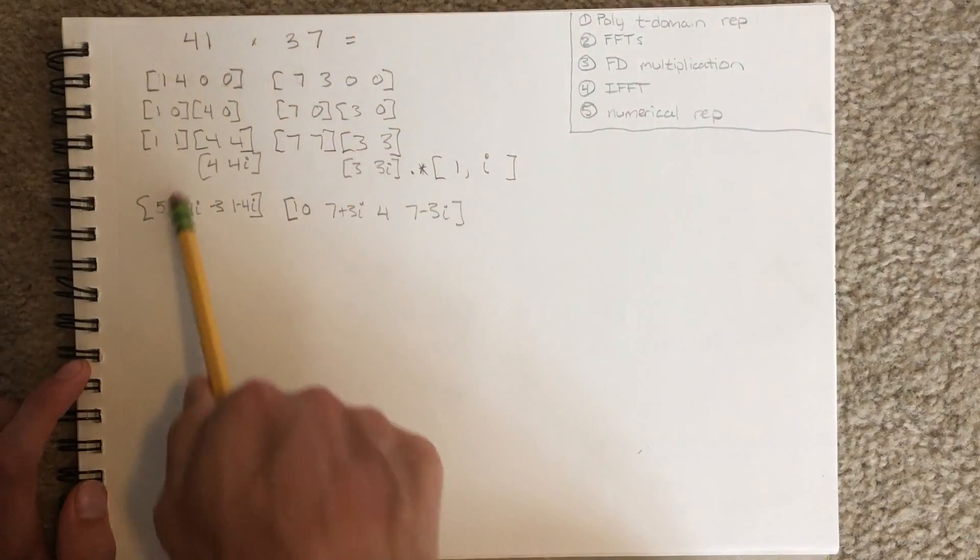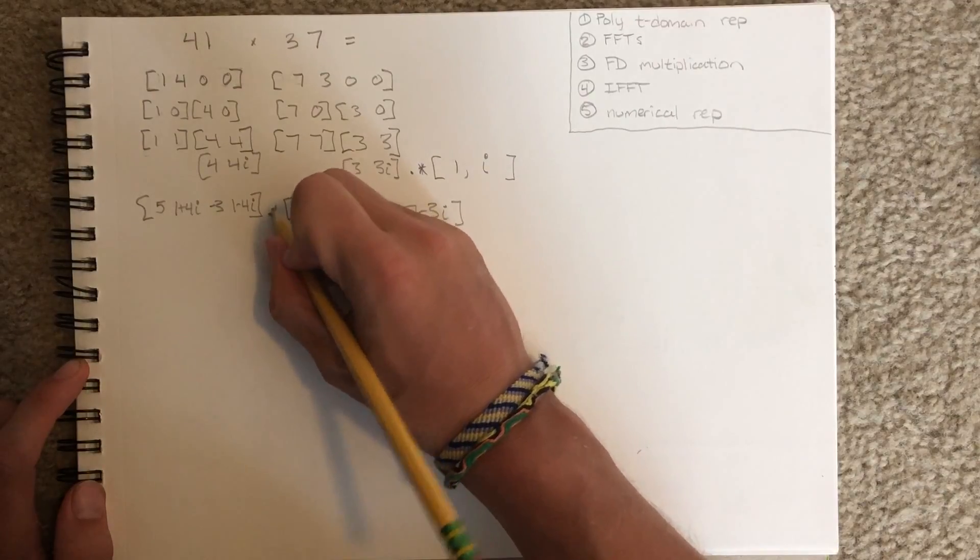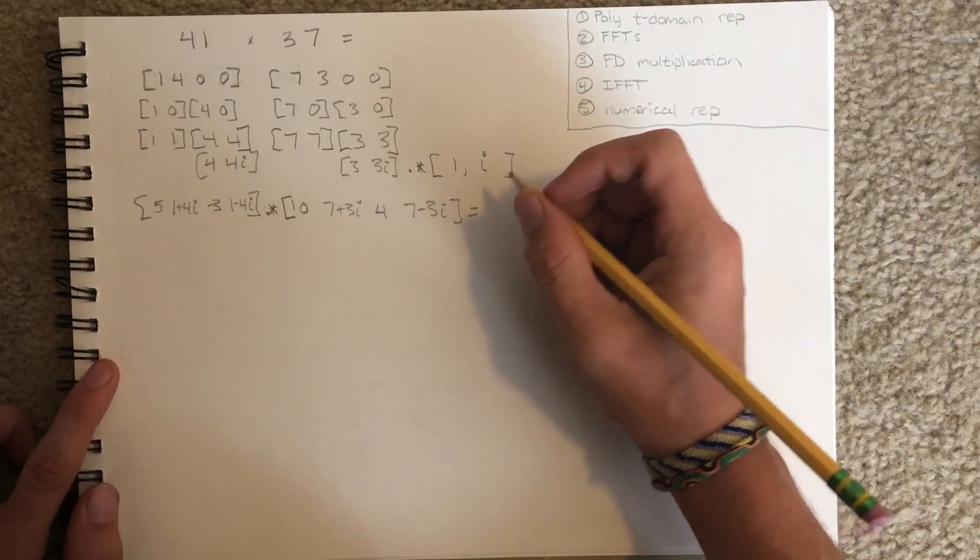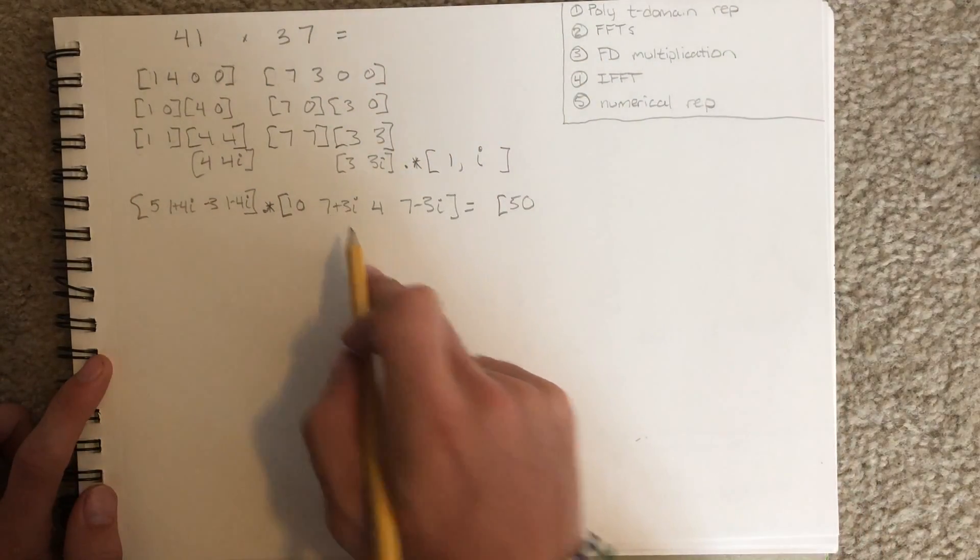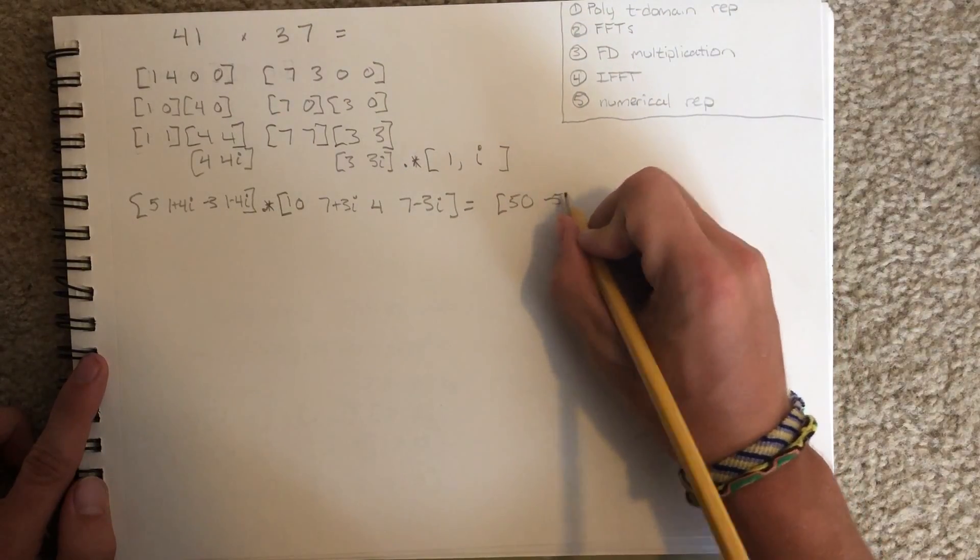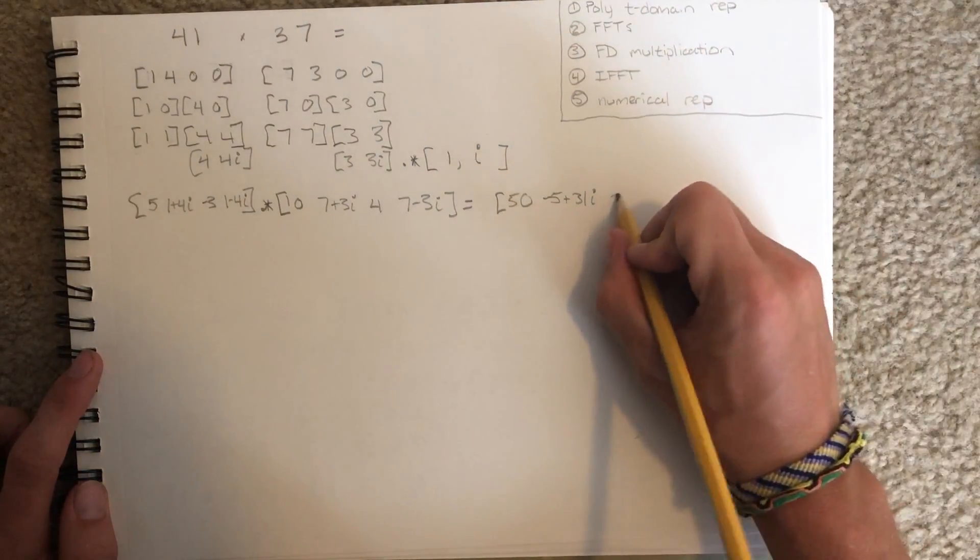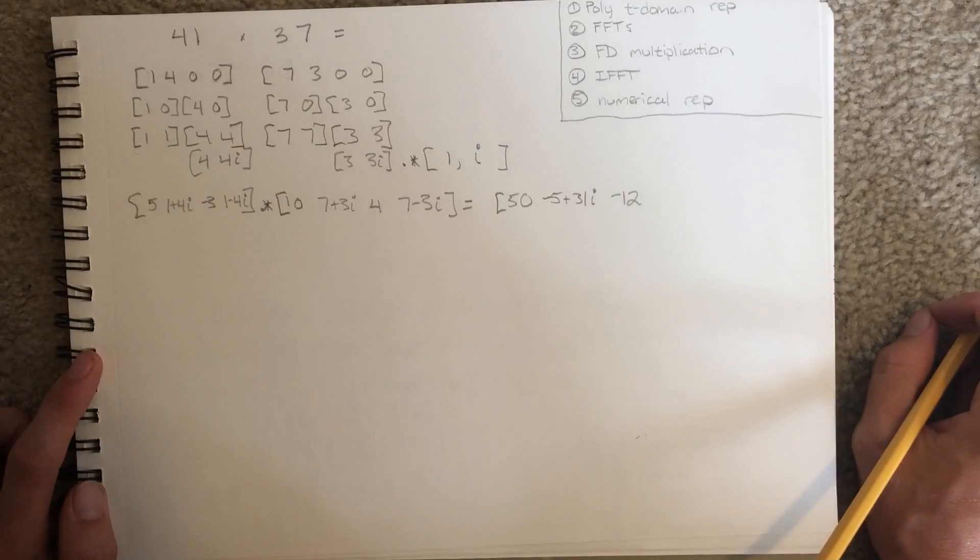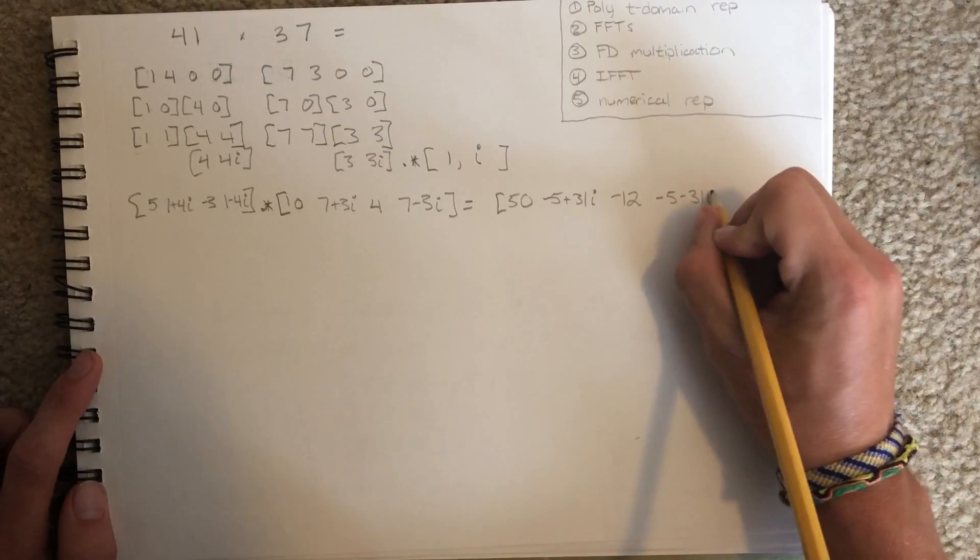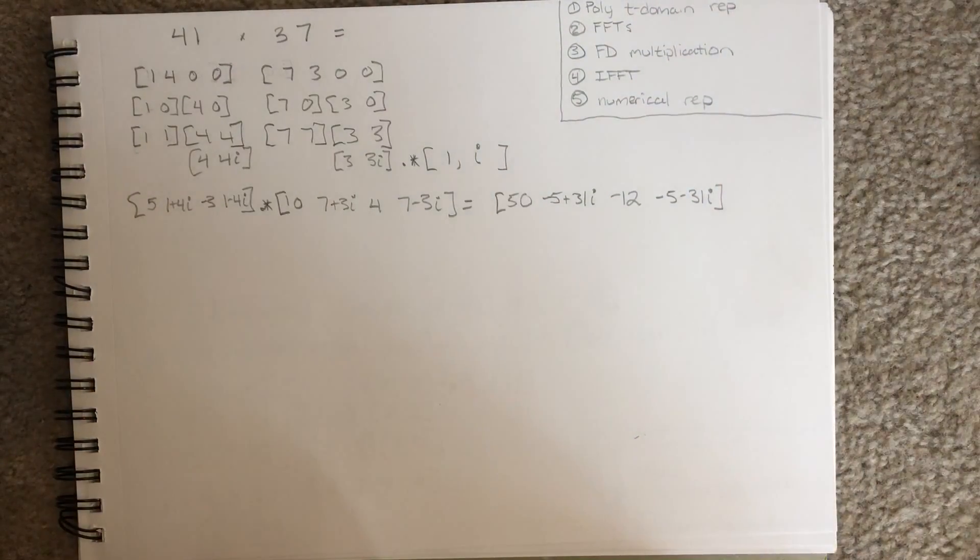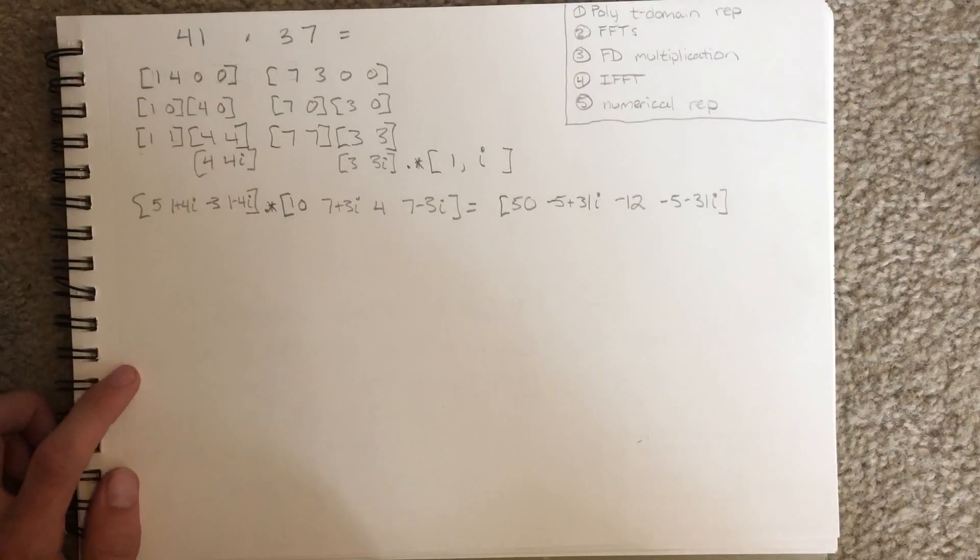Now that we have our two frequency domains, this one for the number 41, this one for the number 37, we are going to point-wise multiply them. And we will yield 5 times 10 is 50. 1 plus 4i times 7 plus 3i is negative 5 plus 31i. Negative 3 times 4 is negative 12, and our final one is negative 5 minus 31i. This is our resulting frequency domain. All we have to do is inverse it back to the time domain.